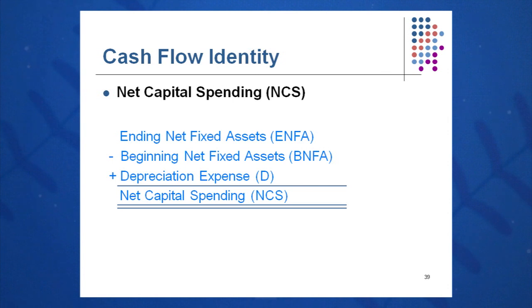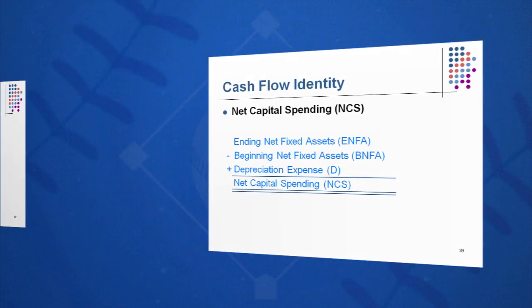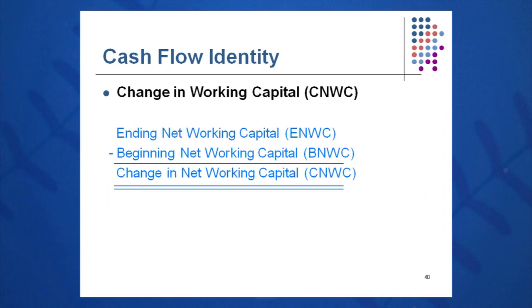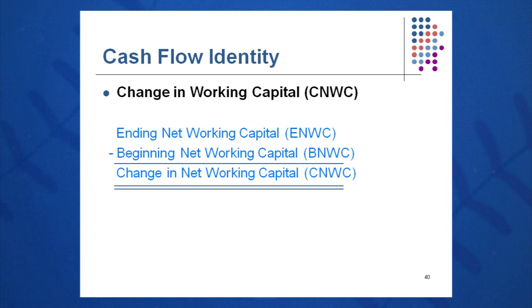That's much easier than taking net values and grossing them up. Finally, change in net working capital is simply ending current assets minus ending current liabilities, minus beginning current assets minus beginning current liabilities. That shows how much cash you have tied up in working capital.